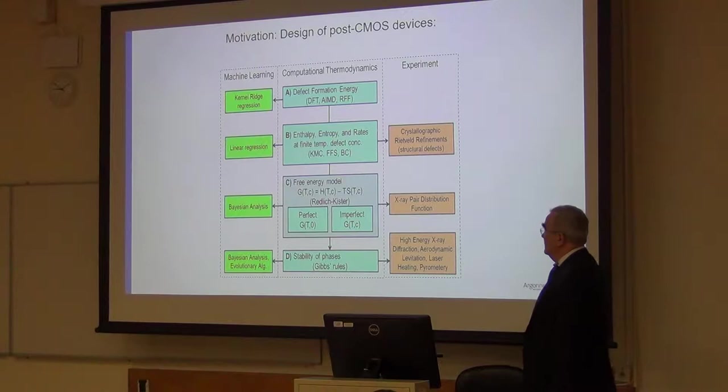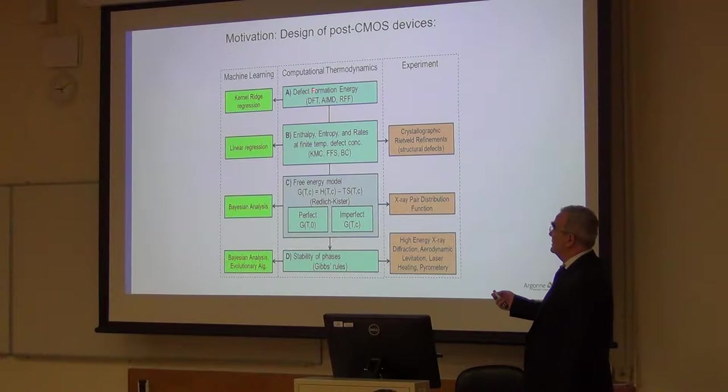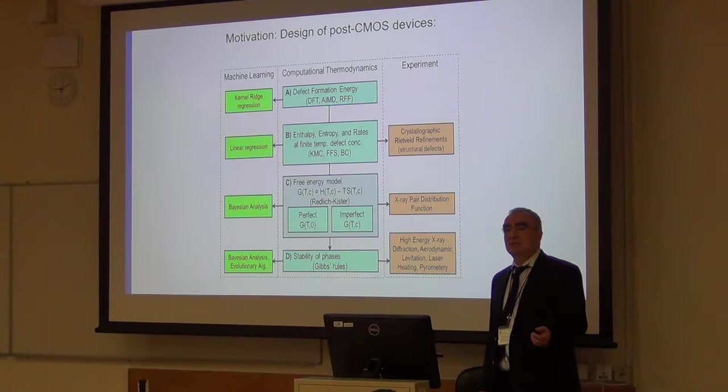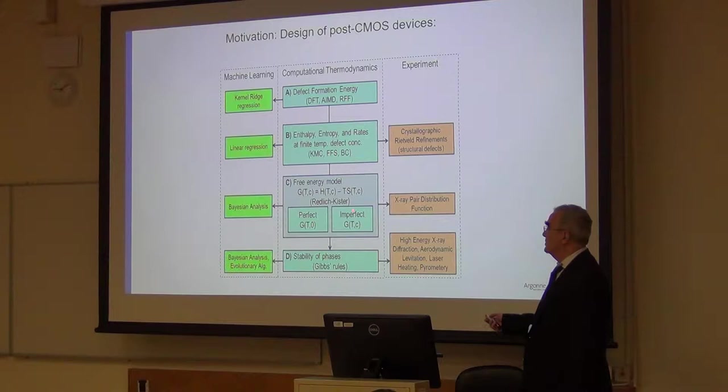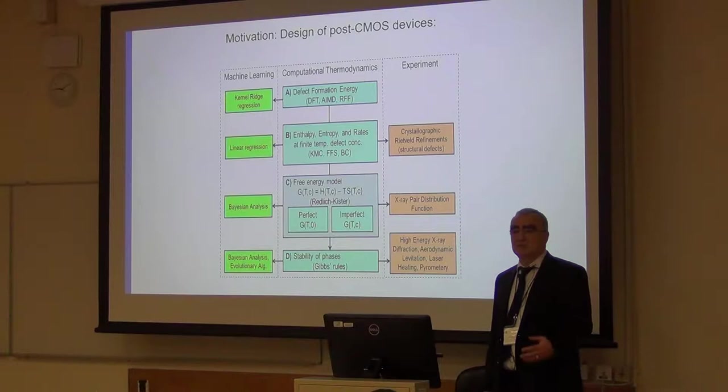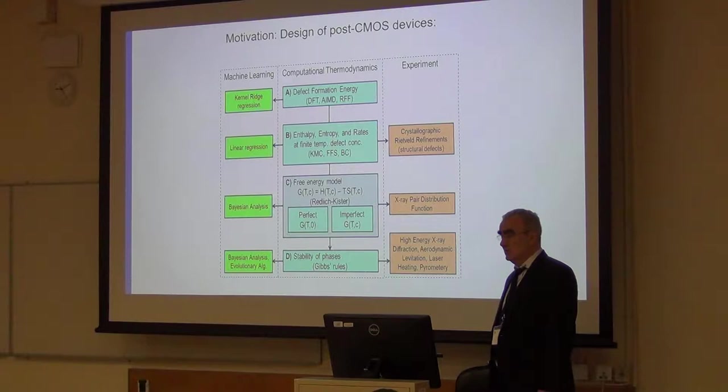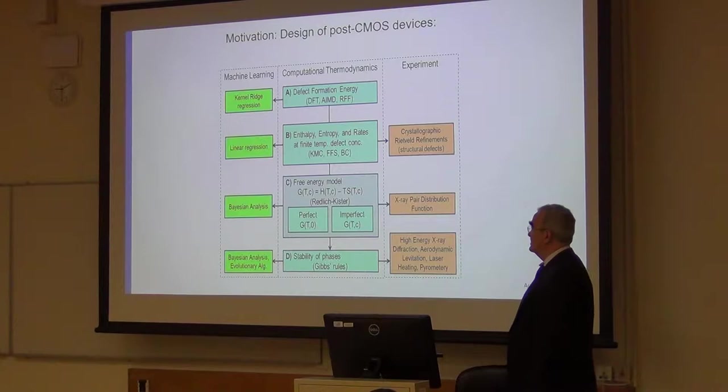We also have a computational thermodynamic component where we try to capture the formation energy of point defects, defect clusters, pores, microstructures, and see how that influences properties of materials. We have a machine learning component with methods such as kernel-ridge regression, random forest, and others. We also use a combination of genetic algorithms and machine learning to optimize interatomic potentials for molecular dynamic calculations. Bayesian analysis, a lot of it.